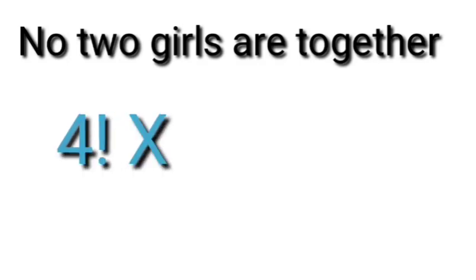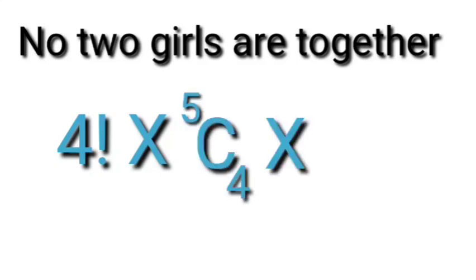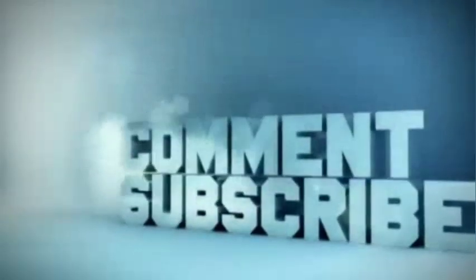Next part: no two girls are together. This is our gap method question. We first arrange the 4 boys: 4 factorial. This creates 5 gaps. We choose 4 of those gaps for the 4 girls: 5C4, then arrange the girls in those gaps: 4 factorial.